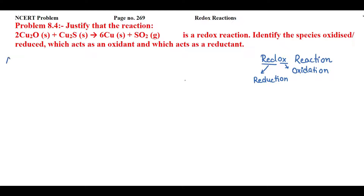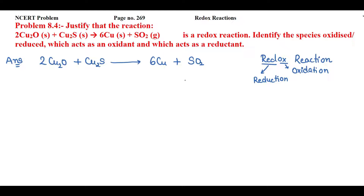Now in this reaction we have 2 cupric oxide plus copper sulfide giving rise to 6 copper plus sulfur dioxide. First of all, we will find the oxidation state of the elements present in the molecules.